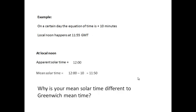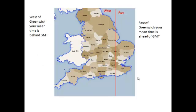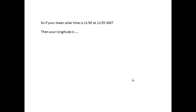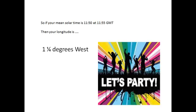Why is Middlesbrough mean time different to Greenwich mean time? Because it's not Greenwich — it's Middlesbrough. Looking at this graph: if you live east of the prime meridian, the sun rises earlier and culminates earlier. If you live west, the sun rises later and culminates later. So your local noon depends on your longitude, and for every four minutes difference, that equates to one degree of longitude. If your mean solar time is 11:50 at 11:55 GMT, then your longitude is one and a quarter degrees west — and for Middlesbrough, that's a pretty good answer.